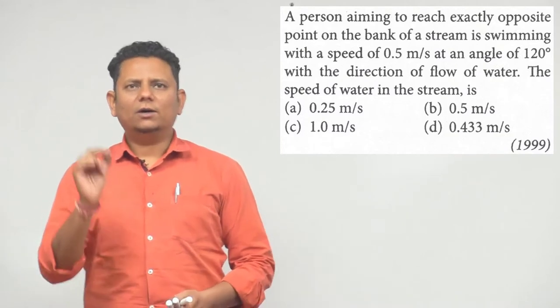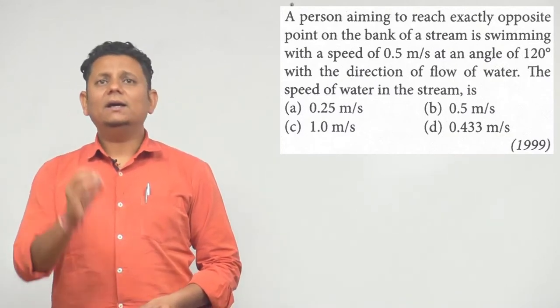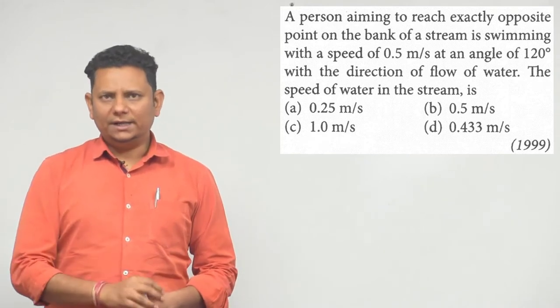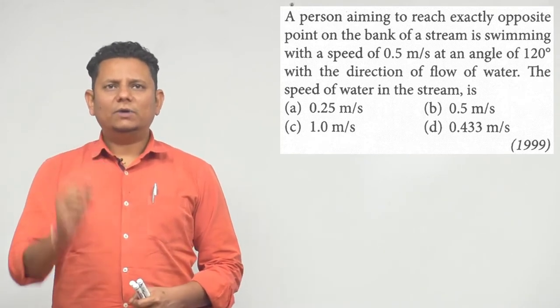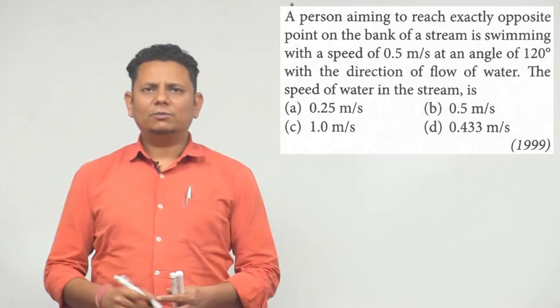Next question, 99 ka sawaal. It says a person aiming to reach exactly opposite point on the bank of a stream is swimming with a speed of 0.5 meter per second at an angle of 120 degrees with the direction of flow of the water. The speed of water from the stream will be.